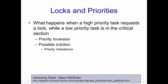One solution for the priority inversion problem is known as priority inheritance. Whenever a low priority task is executing in the critical section and a high priority task requests it, the low priority task is escalated to a high priority — its priority becomes equal to that of the high priority task. The low priority task then executes at this elevated priority until it releases the critical section, ensuring that the high priority task can proceed relatively quickly.